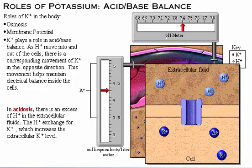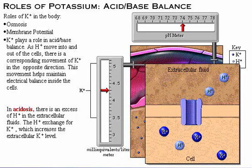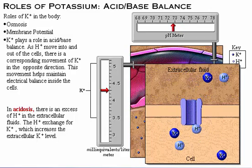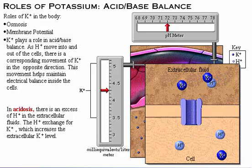In acidosis, there is an excess of hydrogen ions which determines the pH in the extracellular fluids. The hydrogen ions exchange for potassium ions, increasing the extracellular potassium level.